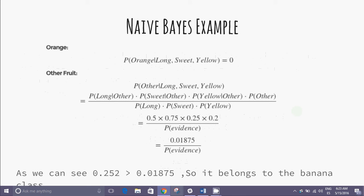For orange class, probability of orange conditioned to long, sweet, yellow is 0. And for other fruit, it will be probability of long conditioned to other times probability of sweet conditioned to other times probability of yellow conditioned to other times probability of other divided by probability of long times probability of sweet times probability of yellow, which evaluates to 0.01875.